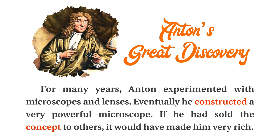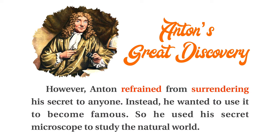For many years, Anton experimented with microscopes and lenses. Eventually, he constructed a very powerful microscope. If he had sold the concept to others, it would have made him very rich. However, Anton refrained from surrendering his secret to anyone. Instead, he wanted to use it to become famous. So, he used his secret microscope to study the natural world.